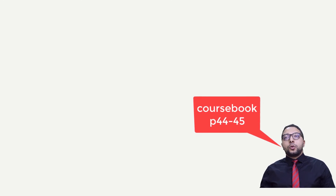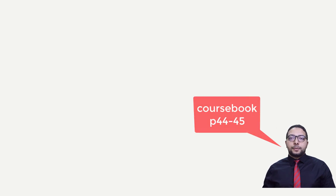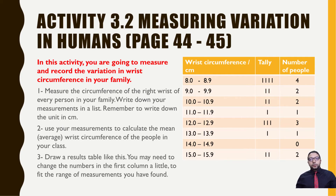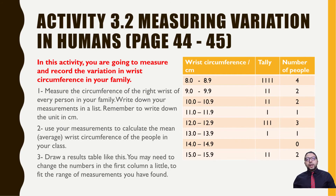Now it's activity time. We're going through activity 3.2: measuring variation in humans, pages 44 and 45. You are going to measure and record the variation in wrist circumference in your family. Get a flexible ruler and pencil and paper to record your results. Measure the circumference of the right wrist of every person in your family, write down measurements in a list like the table shown, and remember to write the unit in centimeters. Then calculate the mean wrist circumference.